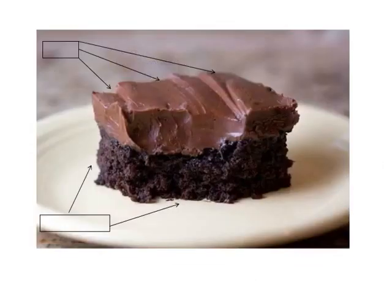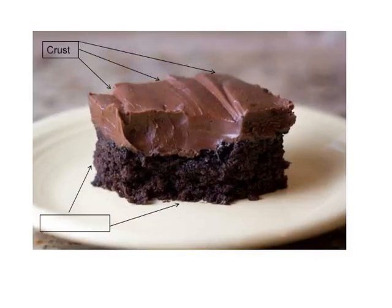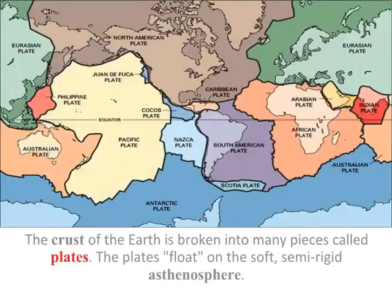Here is an example: the upper cream is the crust, and the base is the lithosphere. The crust of the Earth is broken into many pieces called plates. The plates float on the soft, semi-rigid asthenosphere.